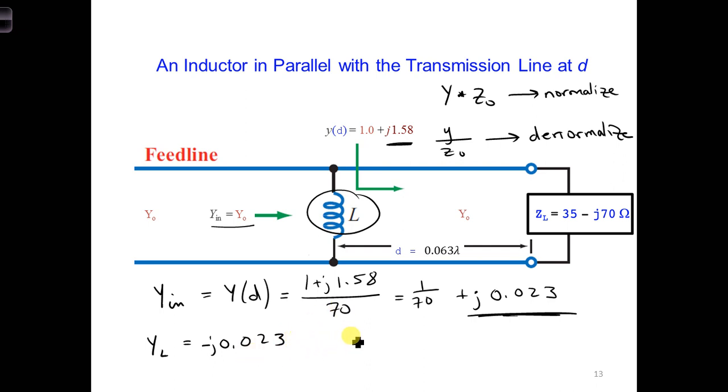We can rearrange our YL equation for an inductor. It's minus J over omega L. So if I move L to the other side and move YL over here, I'll have L is equal to minus J over omega YL, solving for L. And that's minus J omega 2 pi F. F was given earlier as 300 megahertz. And we can put in minus J 0.023. And plugging all this in is 23.1 nanohenrys.